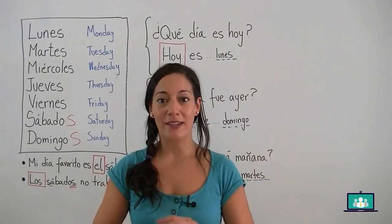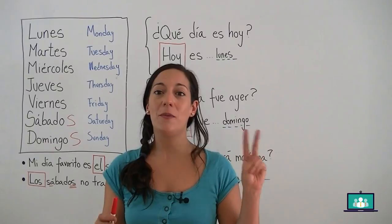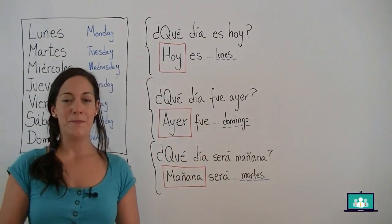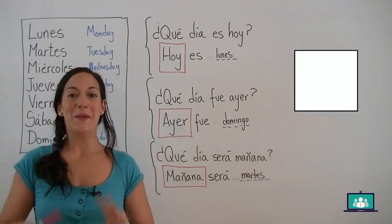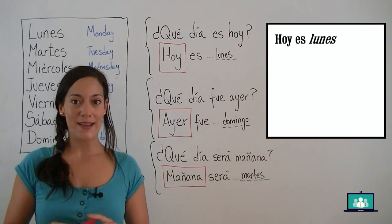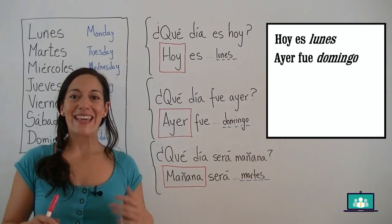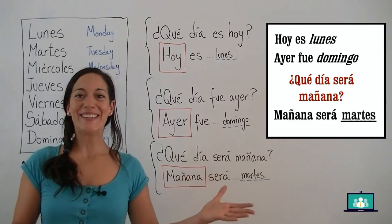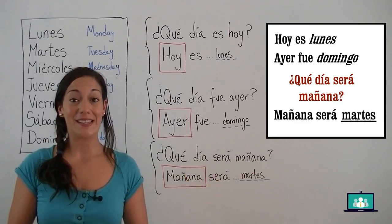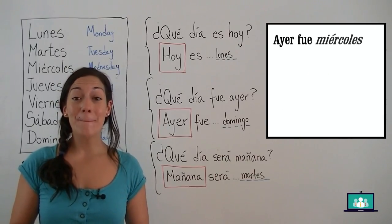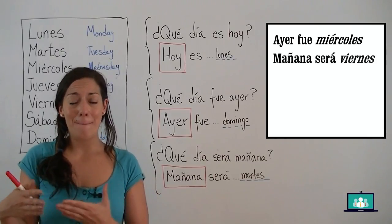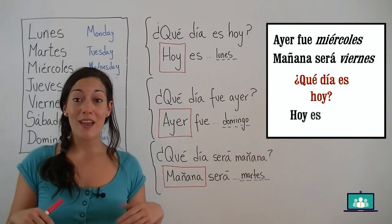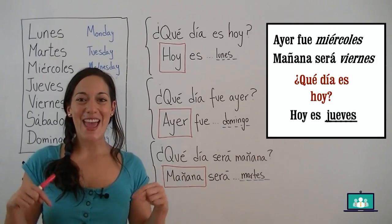I think we are ready to practice. I'm going to give you two pieces of information and you need to answer my questions. Muy fácil — very easy. Hoy es lunes. Ayer fue domingo. ¿Qué día será mañana? Mañana será martes. Muy bien. Next: ayer fue miércoles, mañana será viernes. ¿Qué día es hoy? Hoy es jueves. Muy bien. Hoy es jueves.